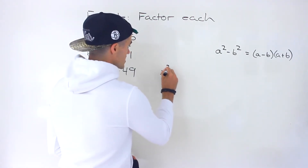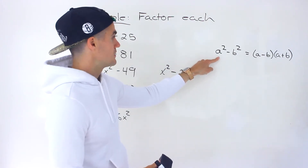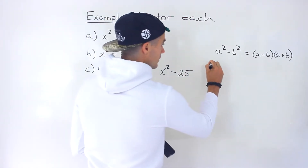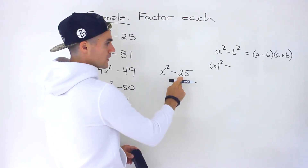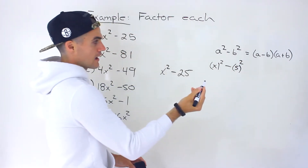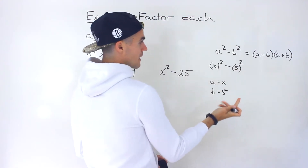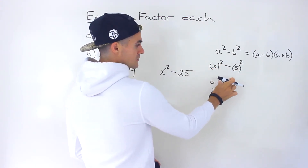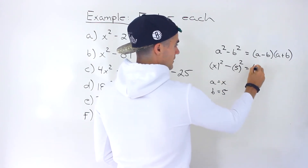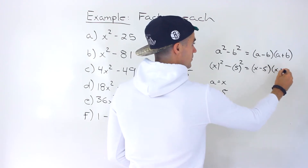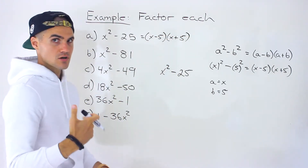Let's start off with x squared minus 25. What we want to do is rewrite it in the a squared minus b squared format. The x squared is already in that format. Then the 25 we can rewrite as 5 squared. So the a value is x, the b value is 5. Plugging those in, we end up with (x minus 5)(x plus 5). That's the final answer for part a.